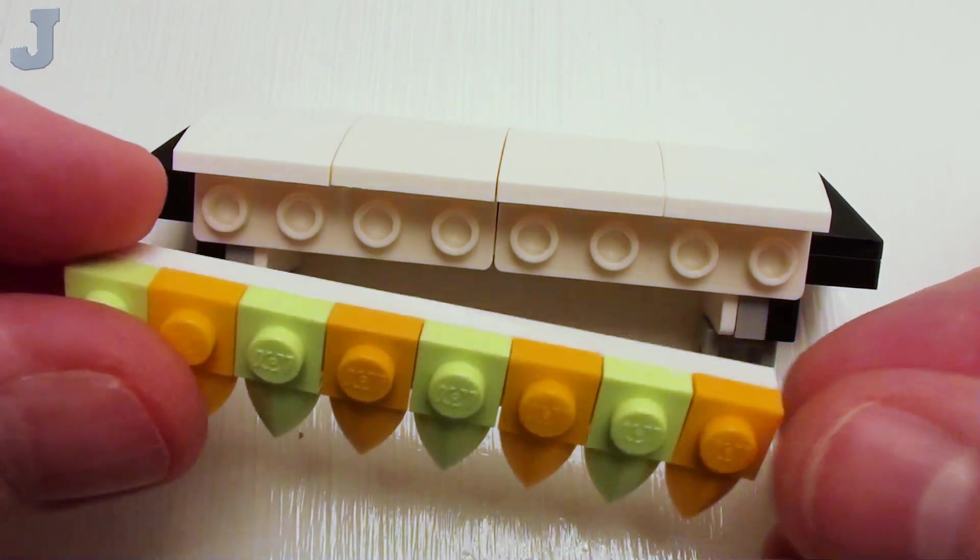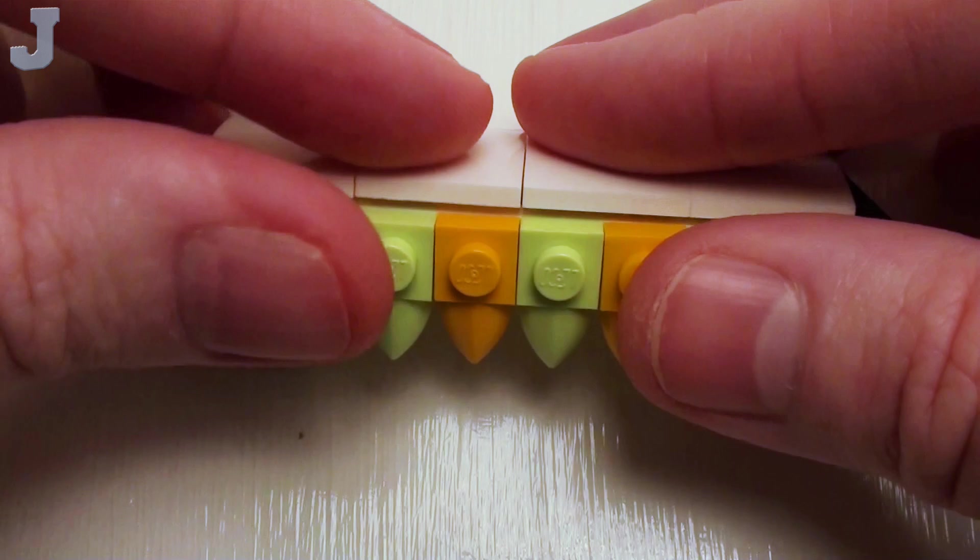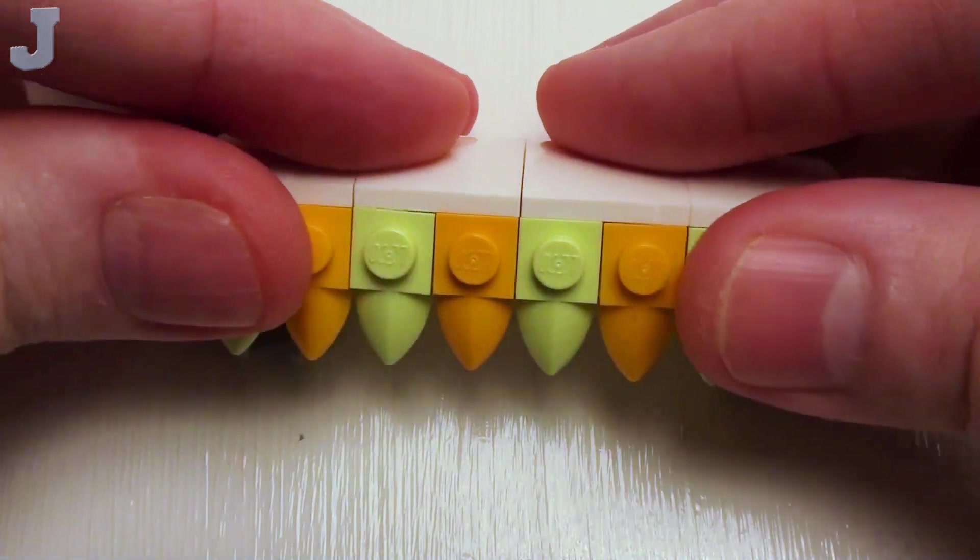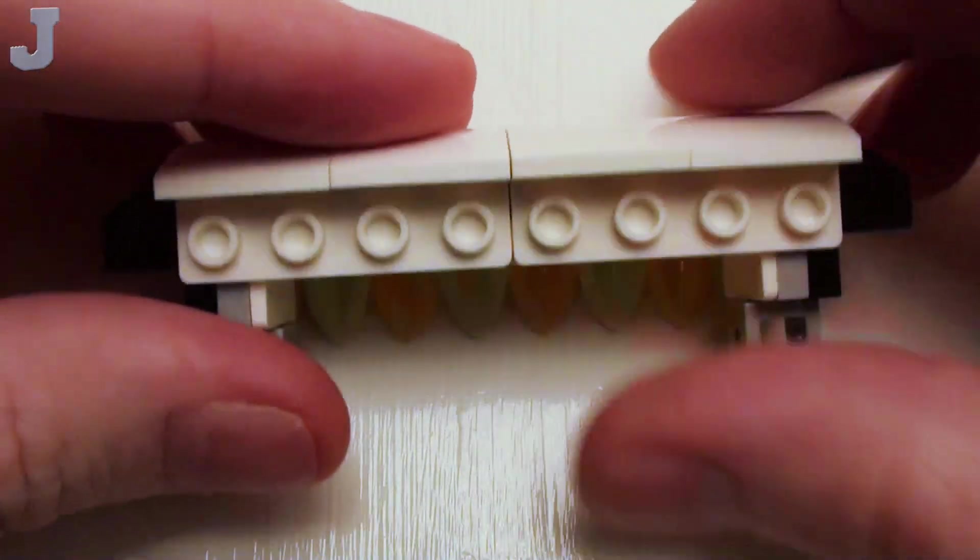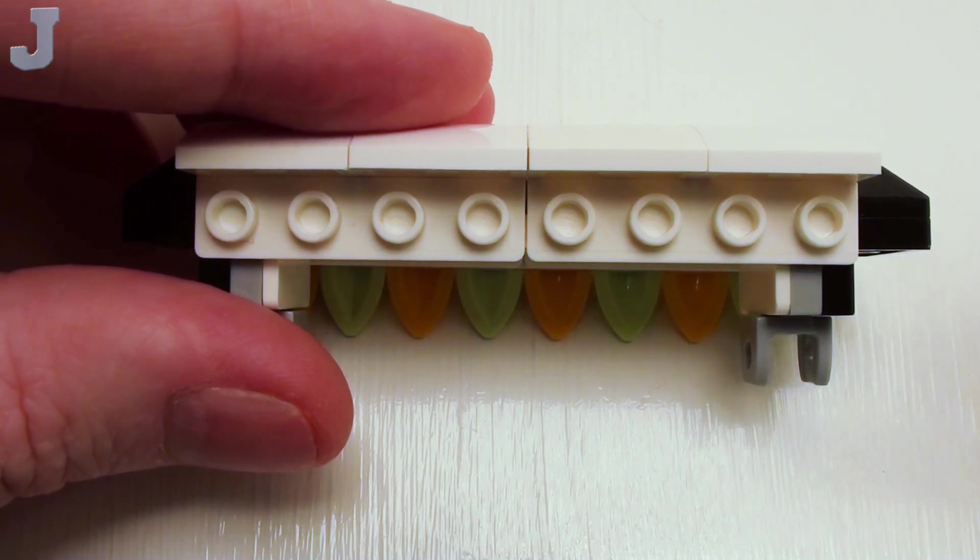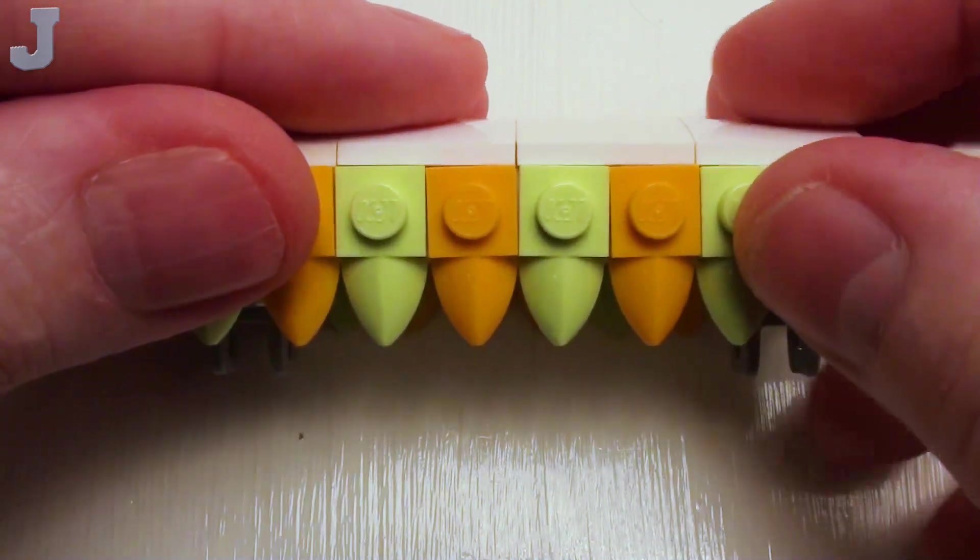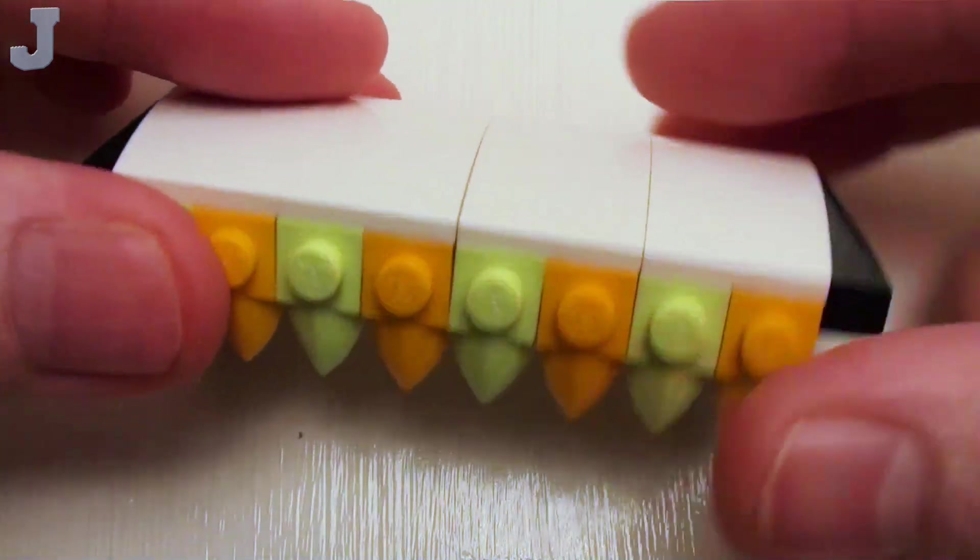Let's place our 1x8 plate with our 1x1 teeth on one side. Then we're going to flip this over and place the other assembly on the other side. Give our awning a bit more of a decorative look.